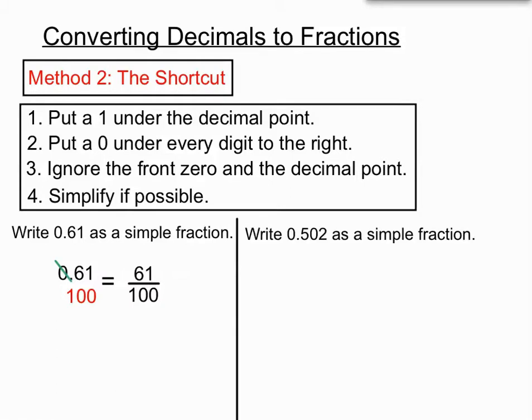If we're asked to write 0.502 as a simple fraction, let's have a look at the process again. We'll put a 1 under the decimal point, we'll put a 0 under each of the other digits to the right. You can see we've almost created a fraction already. Let's ignore the 0 and the decimal point, and you can see there that we've created 502 over 1000.